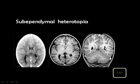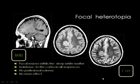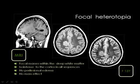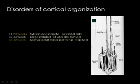Heterotopic lesions can be hardly diagnosed on CT. On MRI T1-weighted images a focal area related to the wall of the ventricle in the occipital region can be identified, and is clearly seen on coronal images. In focal heterotopia — a focal mass of normal cortex within the white matter — T1 and T2 simulate the cortex, there is no edema, no mass effect, and no enhancement after contrast injection.